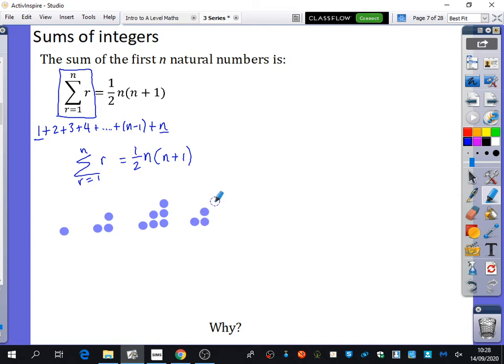If I then added on 4, I would get this shape. So the quantity that there is here should be the answer to the sum of the natural numbers up to that point. So this one here actually represents the sum of r from r equals 1 to 4. And you can clearly see the answer is 4, 5, 6, 7, 8, 9, 10.